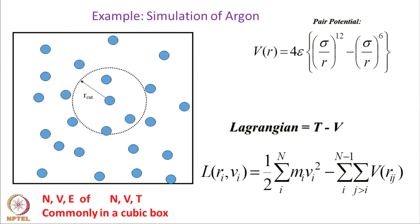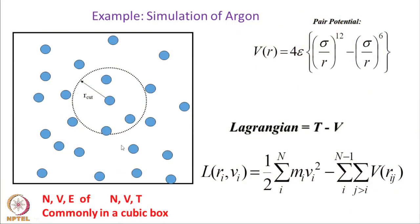Now we will go to a very simple system: simulation of argon. Argon is generally a gas at room temperature, but at low temperatures it can exist as a liquid, and we want to study the molecular dynamics of liquid argon. Why liquid argon? Because all particles are spherical — argon is a monatomic system. If we have a good estimate of the size of an argon atom and know the interaction between two argon atoms, we can do dynamics using this potential.